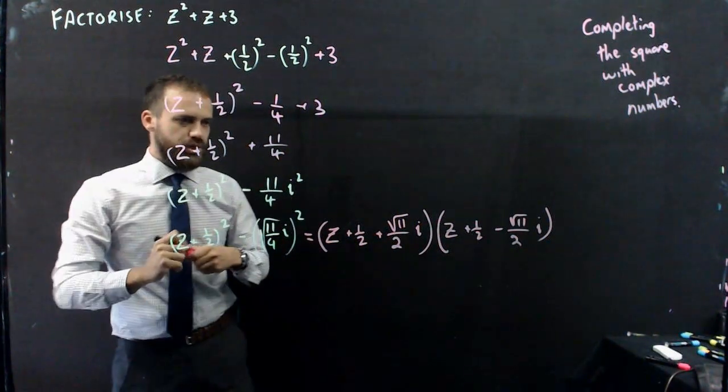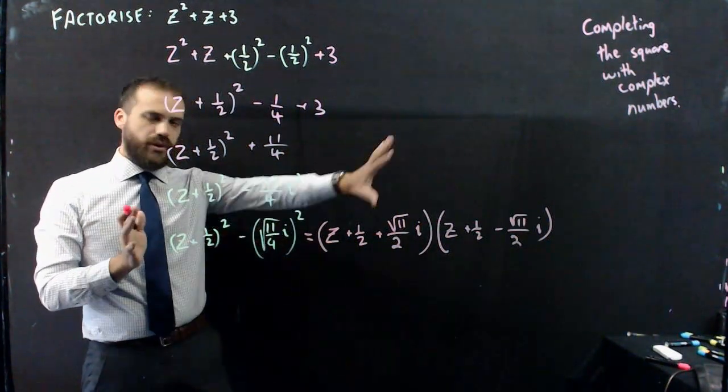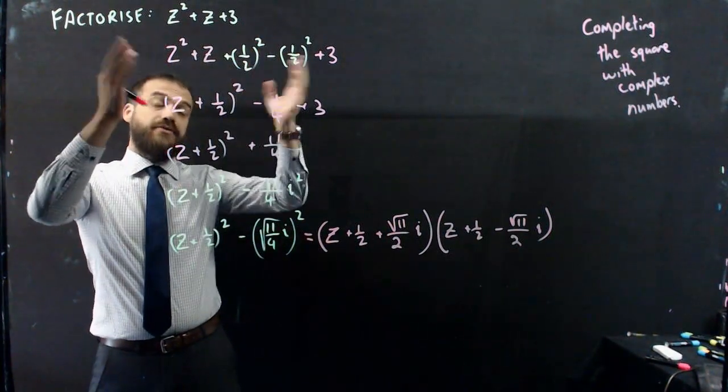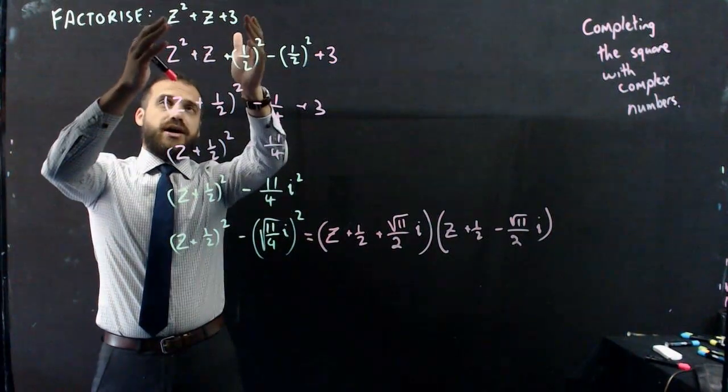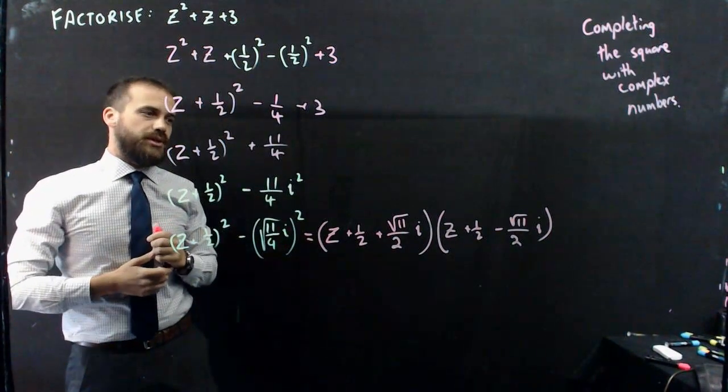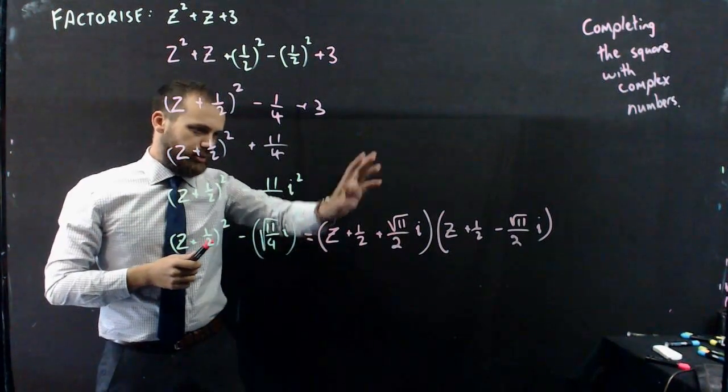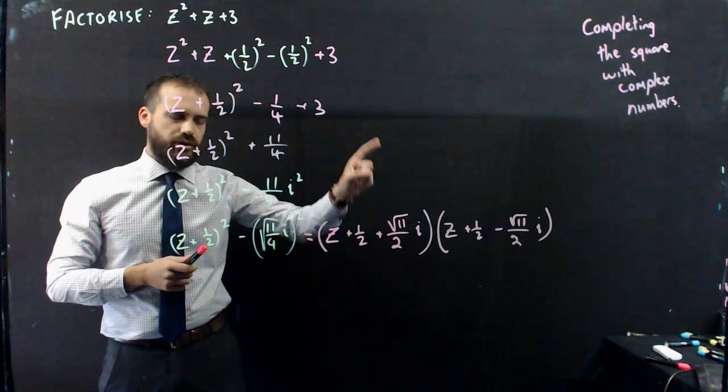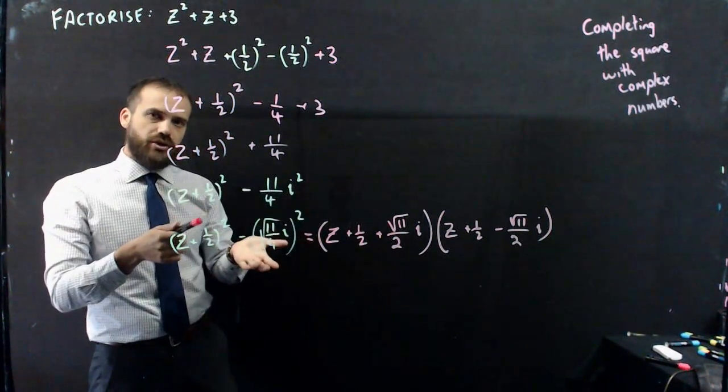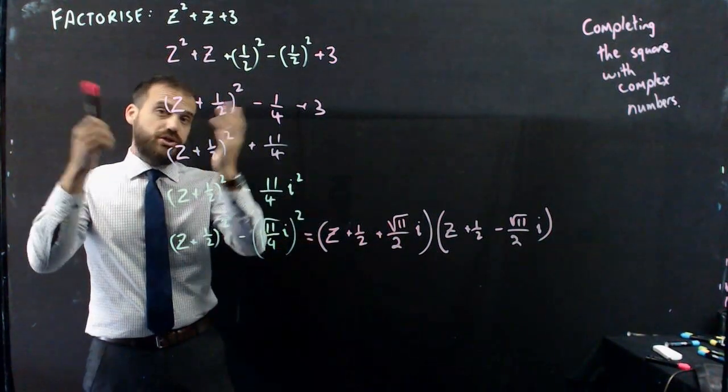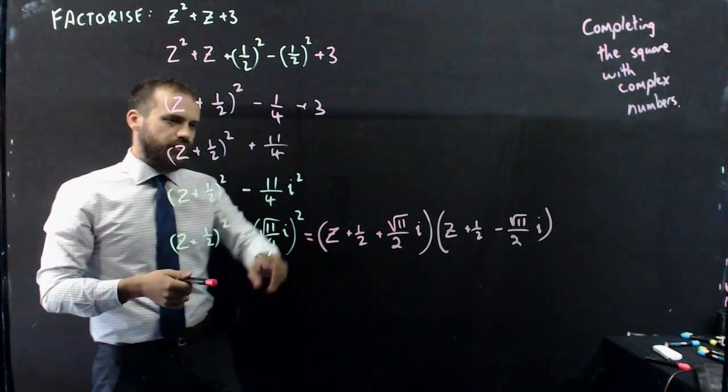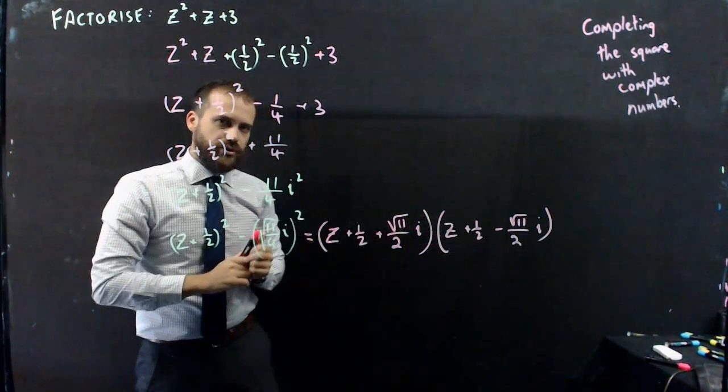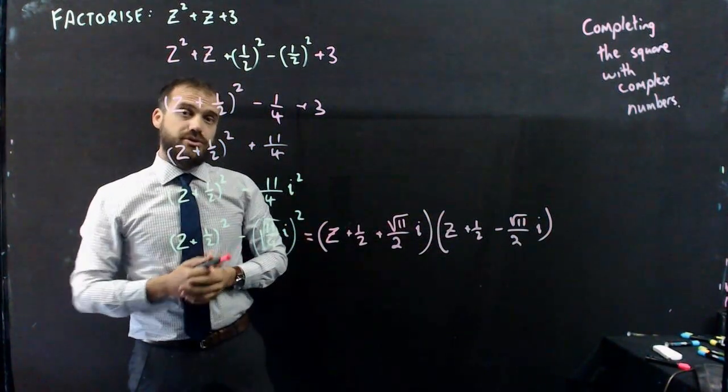All right. So, it's a tricky, tricky deal, but that's where we end up. We have a factorized version of z squared plus z plus 3. We have z plus 1 half plus root 11 on 2i times z plus 1 half minus root 11 on 2i. Now, you can solve this if it was an equation. It's not an equation. But if it was an equation, you could solve it if it was 0 equals all of that. You can then apply your null factor law and you'll get some complex solutions out of this as well.